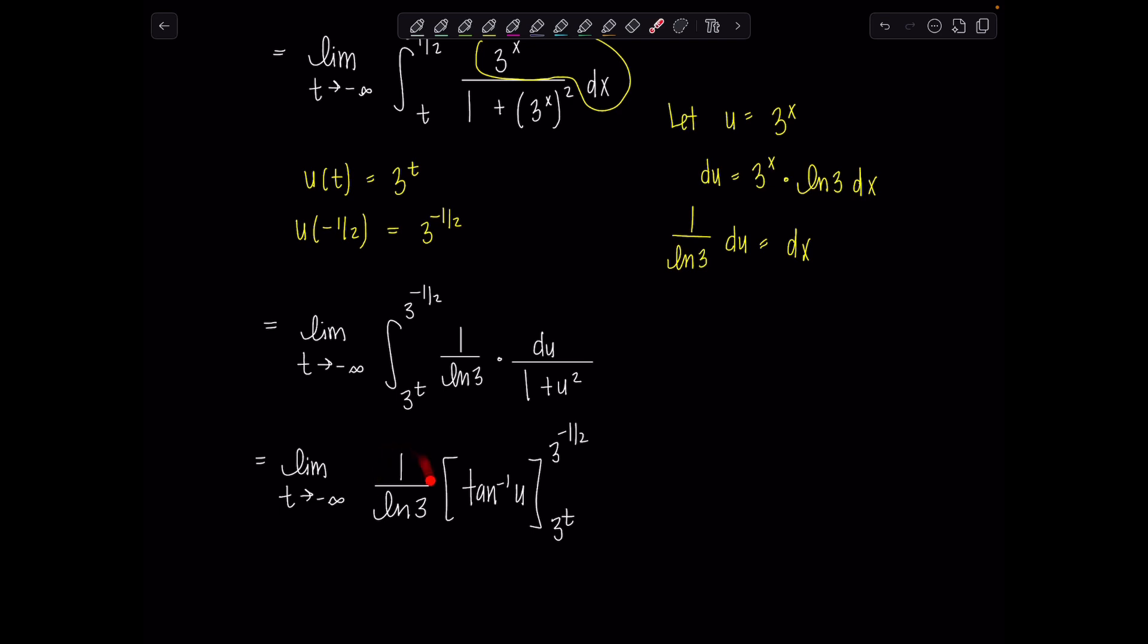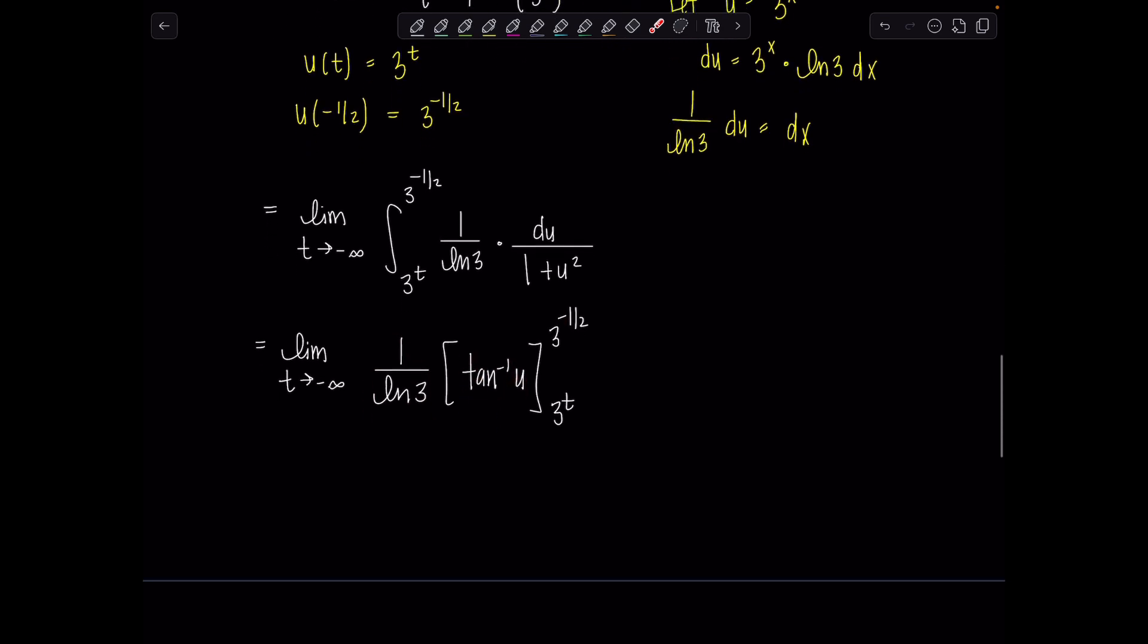Let me just keep the constant outside, right? I can evaluate tan inverse of u at these limits and then multiply by the constant after. No need to make it messy the whole way through. Okay, so here we go. Let's focus. Limit t goes to negative infinity 1 over natural log of 3. Then we have here tan inverse of 3 to the negative one-half, which now I'll write it as 1 over rad 3 minus tan inverse of 3 to the t.